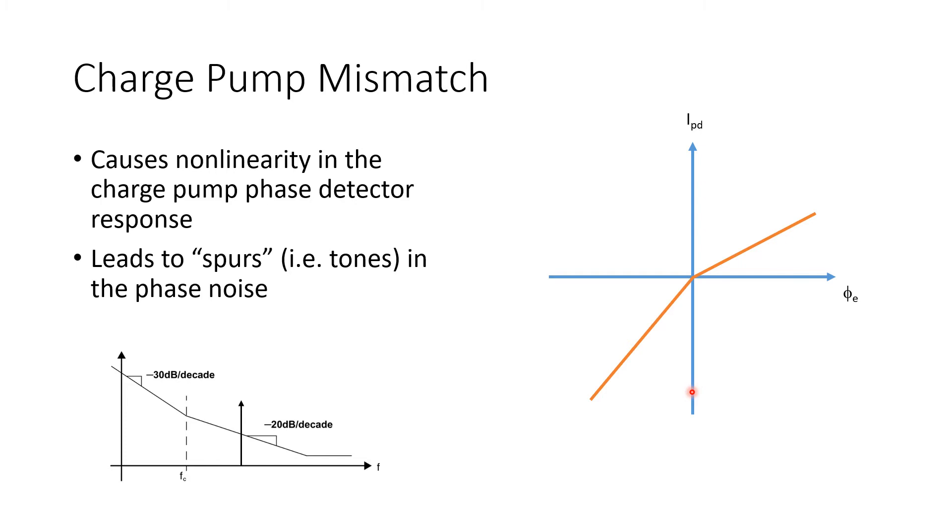And on the y-axis, the average current coming out of the charge pump, averaged over many clock cycles. So you would expect that with more phase error, you'd have positive current coming out of the charge pump. And with more negative phase error, you'd have a lot more negative current coming out of the charge pump. But because of this mismatch, the relationship is nonlinear. There's a kink in the relationship right here at zero phase error.